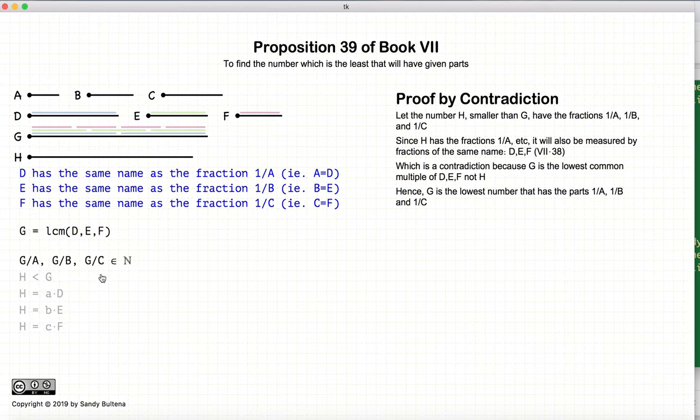Putting that all back together, we have that G is the lowest number that has the parts or fractions A, B, and C. And that's it for this proposition, and it's also the last proposition of book seven.